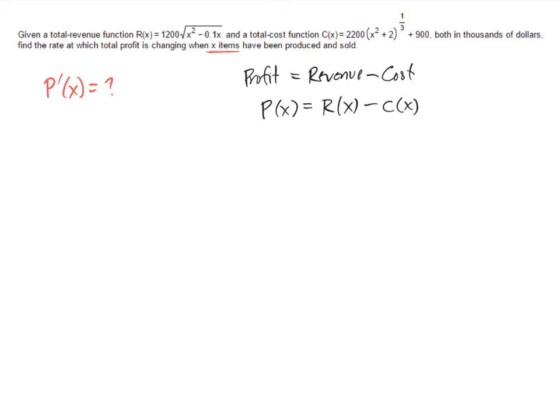And we have formulas for r of x and c of x, and so we could subtract those two formulas to get a formula for p. But what we really want is a formula for p prime. So if we take the derivative of both sides here, p prime of x is equal to r prime of x minus c prime of x. And that's just using the difference rule for derivatives.